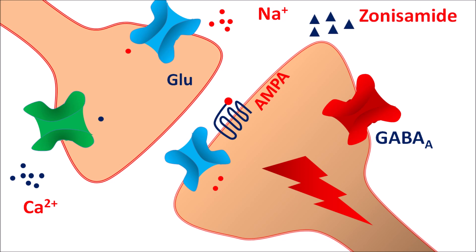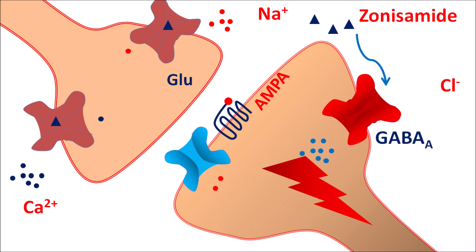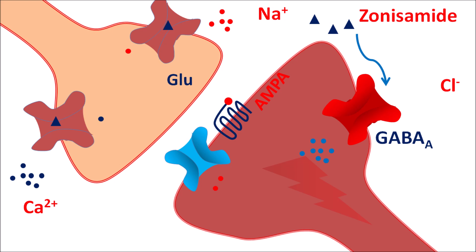Zonisamide is an anti-epileptic agent that acts by multiple mechanisms, though the exact mechanism of action is unknown. This drug can block the voltage-gated sodium channels, resulting in decreased activation of neurons. It can also block the T-type calcium channels, resulting in decreased release of glutamate, thereby reducing neuronal activity. Additionally, this drug has a possible effect on GABA-A — even though it does not directly bind to this receptor, it can increase GABAergic transmission, resulting in hyperpolarization and inhibition of neuronal activity. All these mechanisms contribute to the anti-epileptic action of zonisamide.